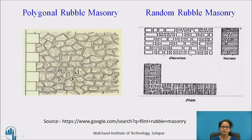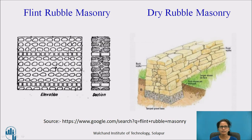Next we have random rubble masonry. In this type, straight beds and sides are used, and the stones are square-shaped. The elevation, section, and plan of the courses are shown. Next we have flint rubble masonry, which is used where flint stones are available in plenty. The thickness of flint stones varies from 8 to 15 cm, and the length varies from 15 to 30 cm.